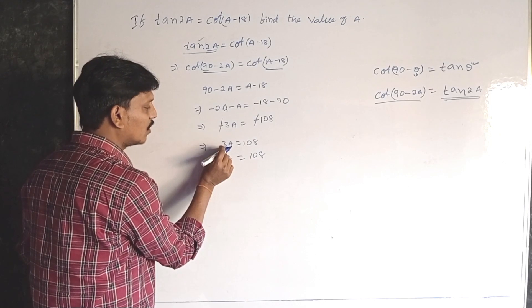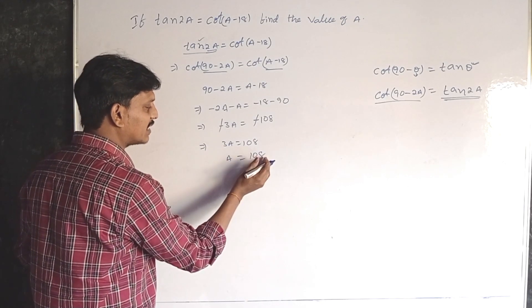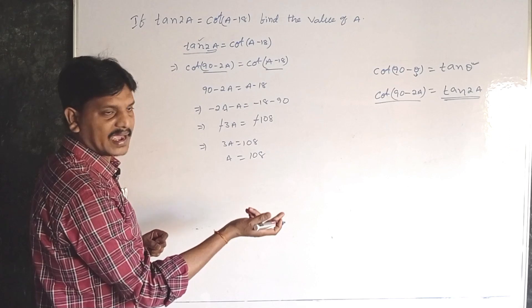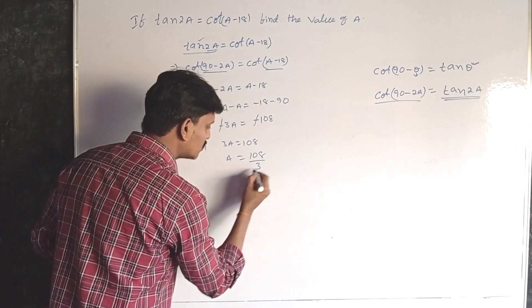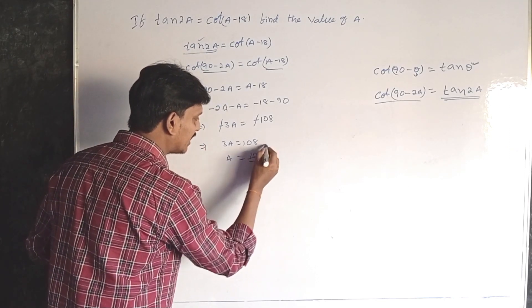Here 3 is multiplied, so we transpose from LHS to RHS then it changes into divided by. It's cancelled - 3 into 3 is 9.